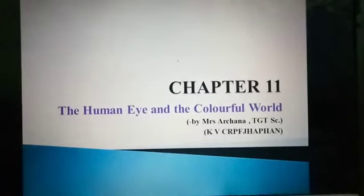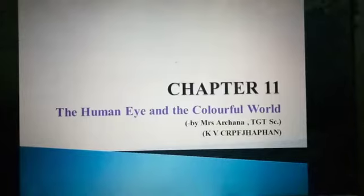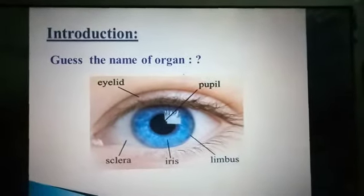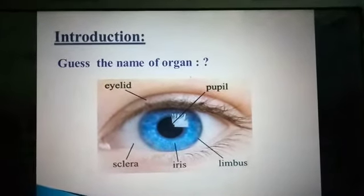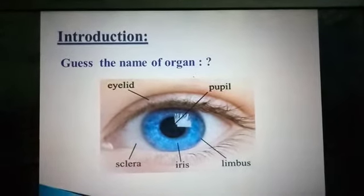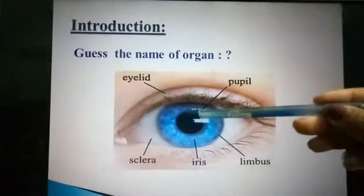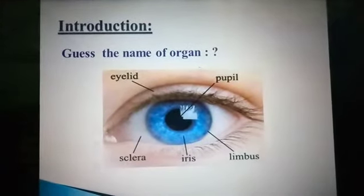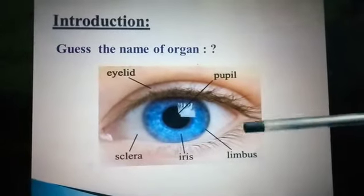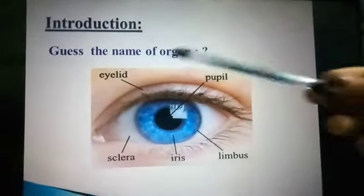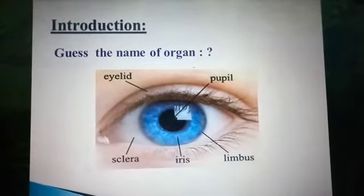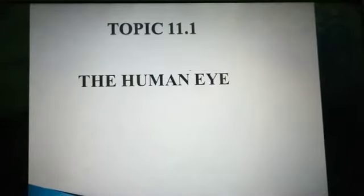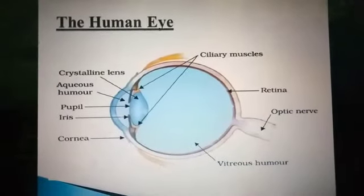Good morning, 10th class. Today our chapter is Chapter 11 and the name is 'The Human Eye and the Colorful World.' Here is the introduction — guess the name of the organ. There is an eyelid, then this black one is the pupil, this blue color is the iris (sometimes the color of iris may be brown or black also), the margin is the limbus, and the white portion is the sclera. This whole organ is the eye. Today our topic is the human eye.